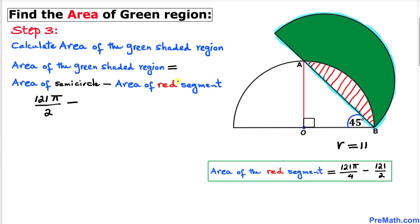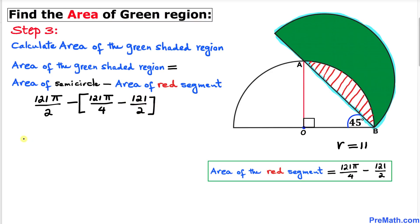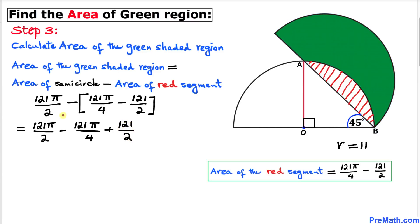Now let's subtract the area of the red segment. So we have 121 pi divided by 2, minus the bracket containing 121 pi divided by 4 minus 121 divided by 2. Distributing the negative sign gives us 121 pi divided by 2, minus 121 pi divided by 4, plus 121 divided by 2. Our denominators are 2, 4, and 2.